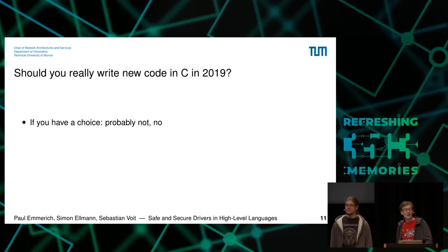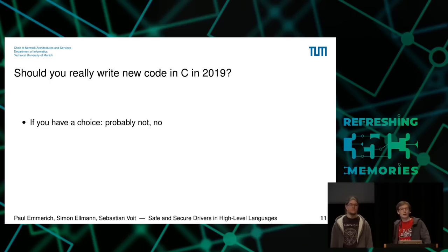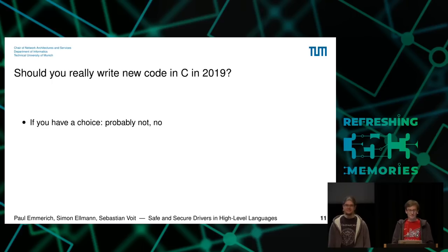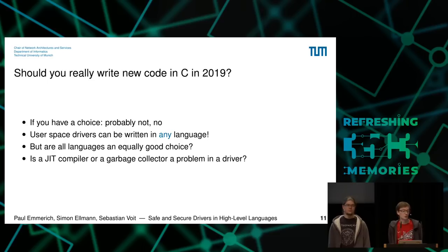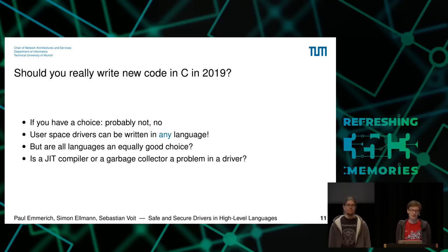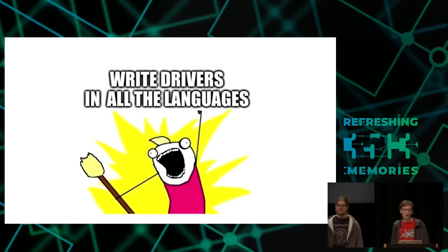Should you be writing new code in C in 2019? Probably not if you have a choice, but you often don't. If you're writing kernel code, you can write a kernel module in Rust, but good luck getting it upstreamed. Writing a kernel module in JavaScript is probably not going to work either. This is why we are looking at userspace drivers — they can be written in virtually any language. The question is: are all languages equally good choices? Is a JIT compiler or garbage collector a problem in a driver?